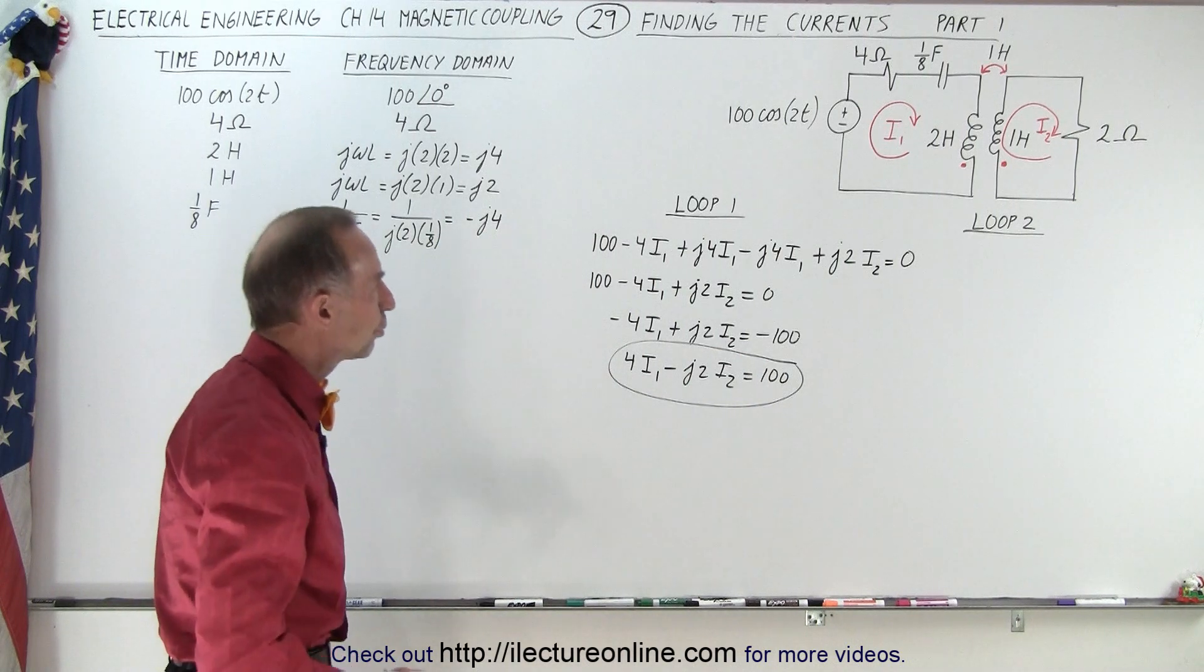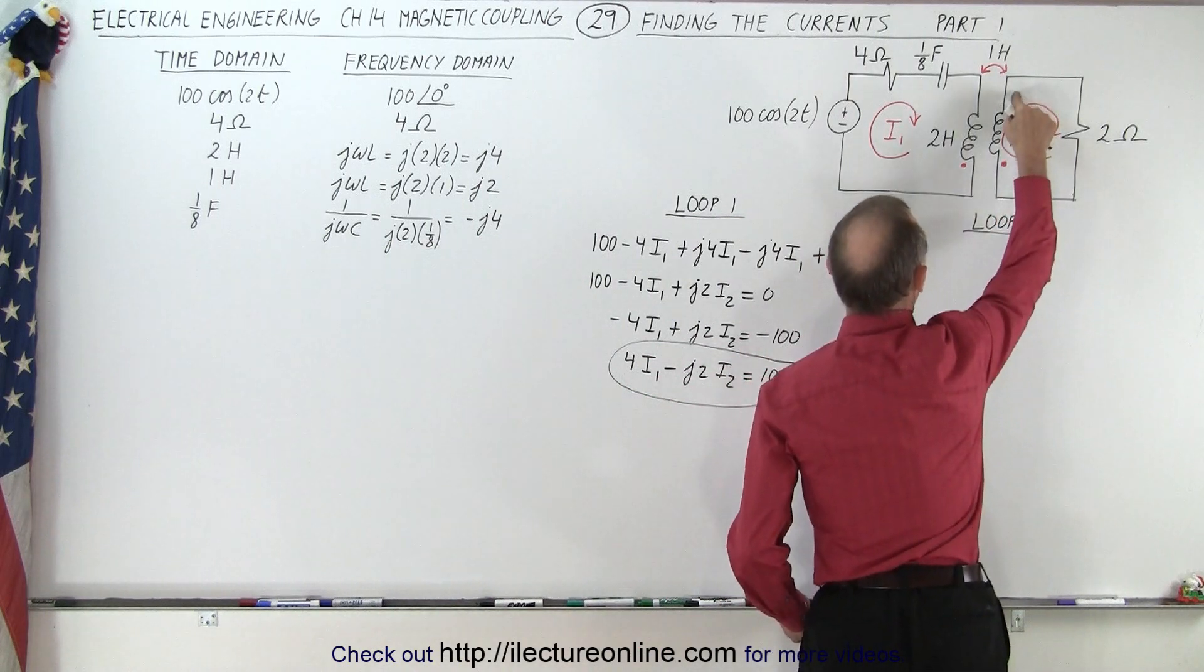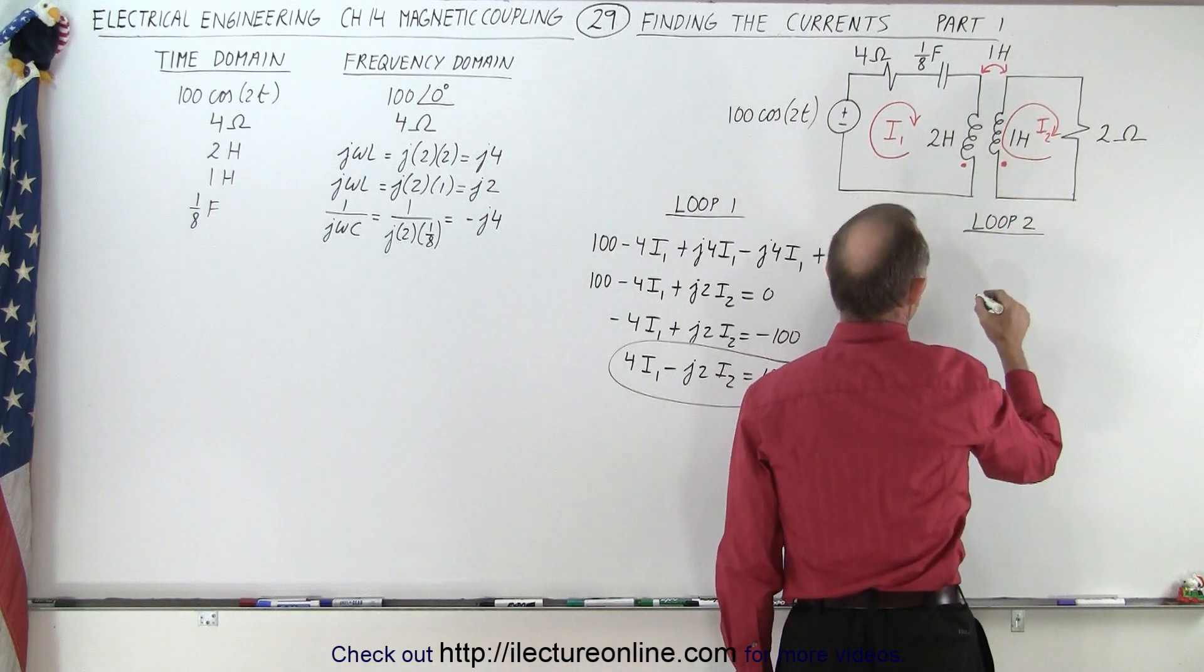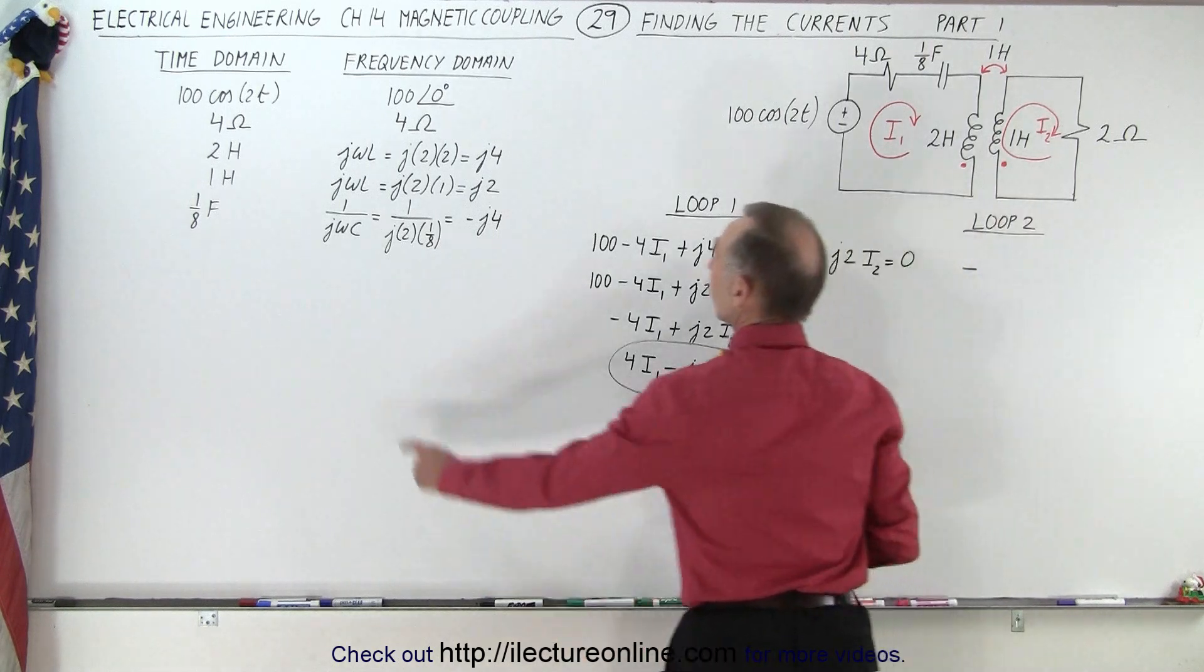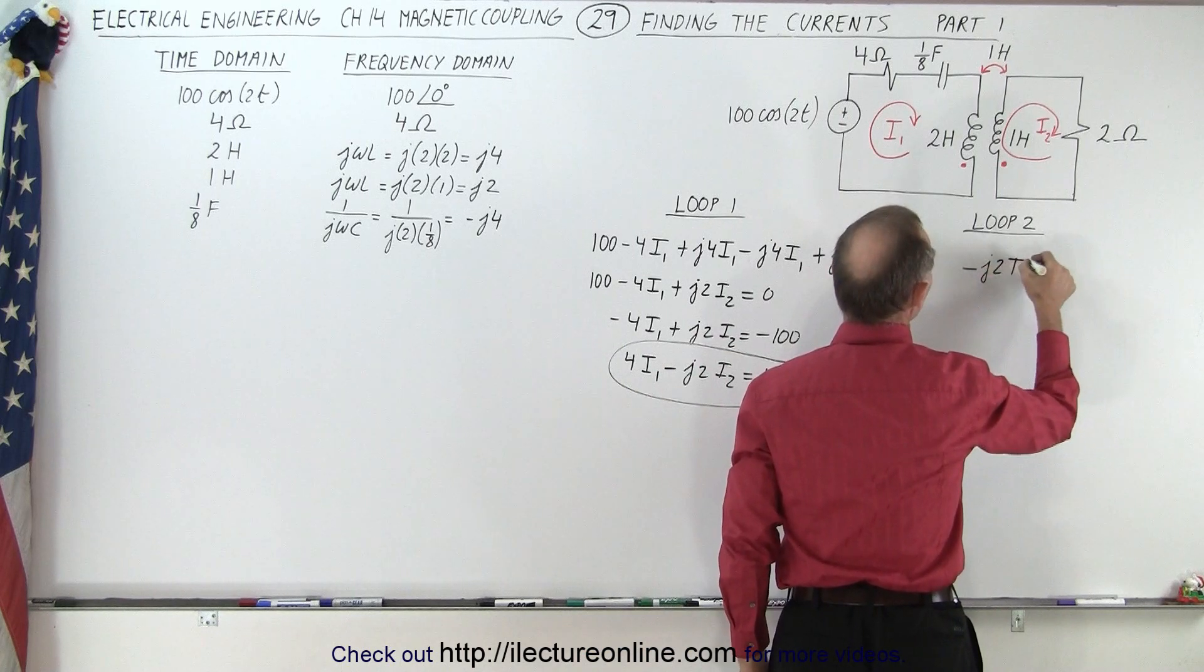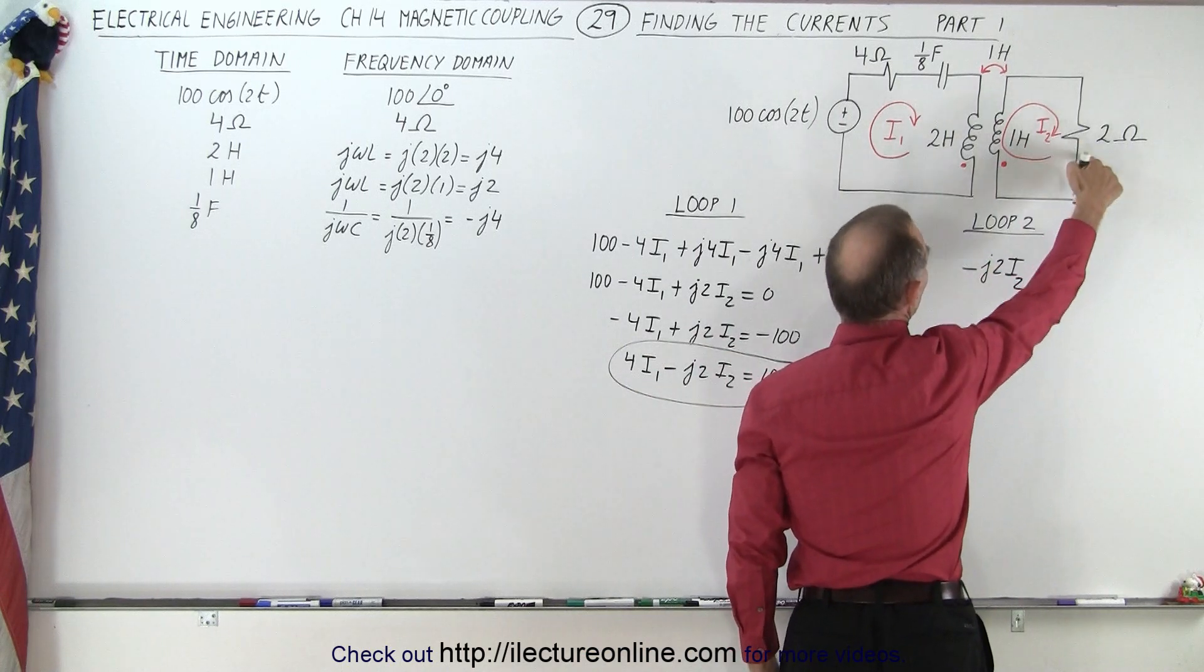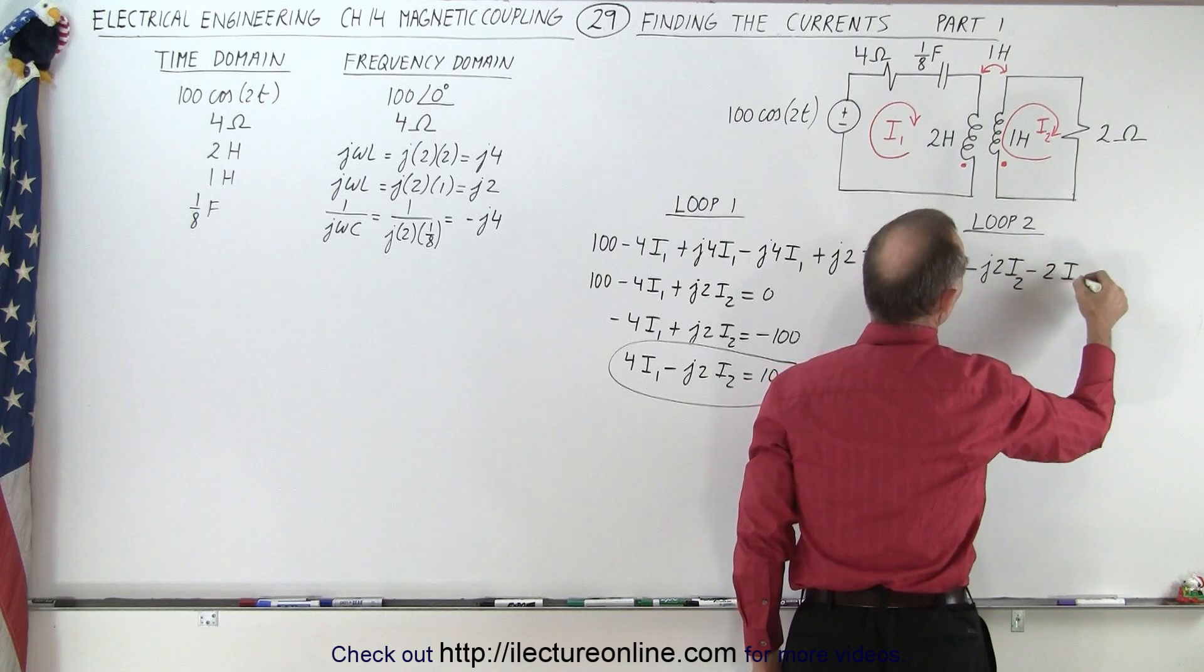All right, let's do this now for loop two. Let's start over here, and we go across the inductor, that's a voltage drop, and so we end up with a minus. One Henry, of course, is going to be a J2, so it's a minus J2 times I2. Coming around, we drop across the resistor, so it's minus 2 ohms times I2.